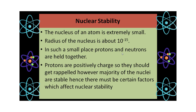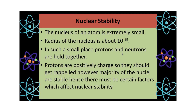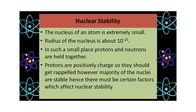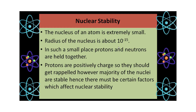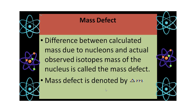As we saw earlier, in a very small place — the nucleus is extremely small — protons and neutrons are present. Protons, which are positively charged particles, are present in a very small place. And we know that same or like charges repel each other, so they should get repelled. But we can see that majority of the nuclei are stable. Hence, there must be certain factors which create nuclear stability.